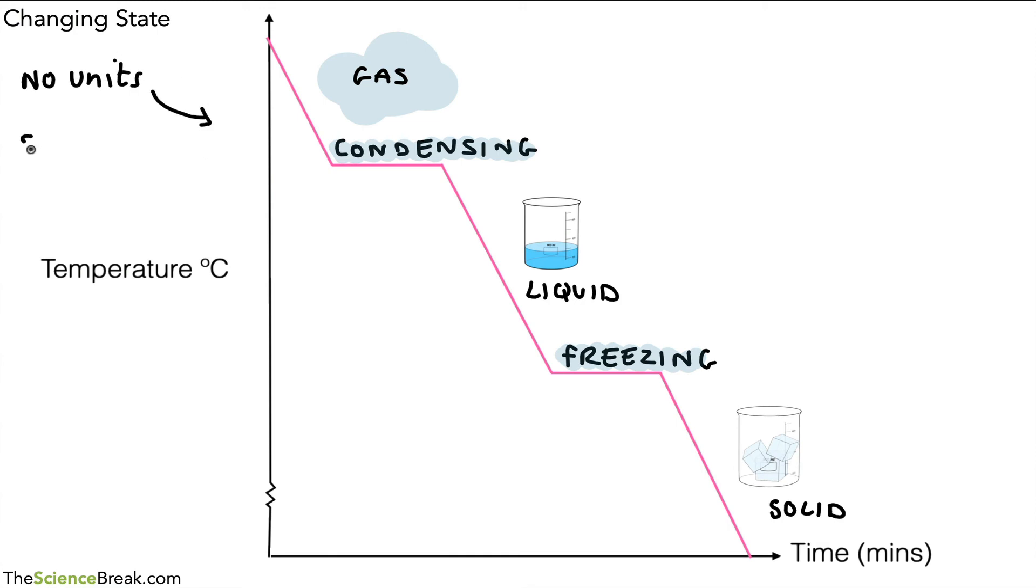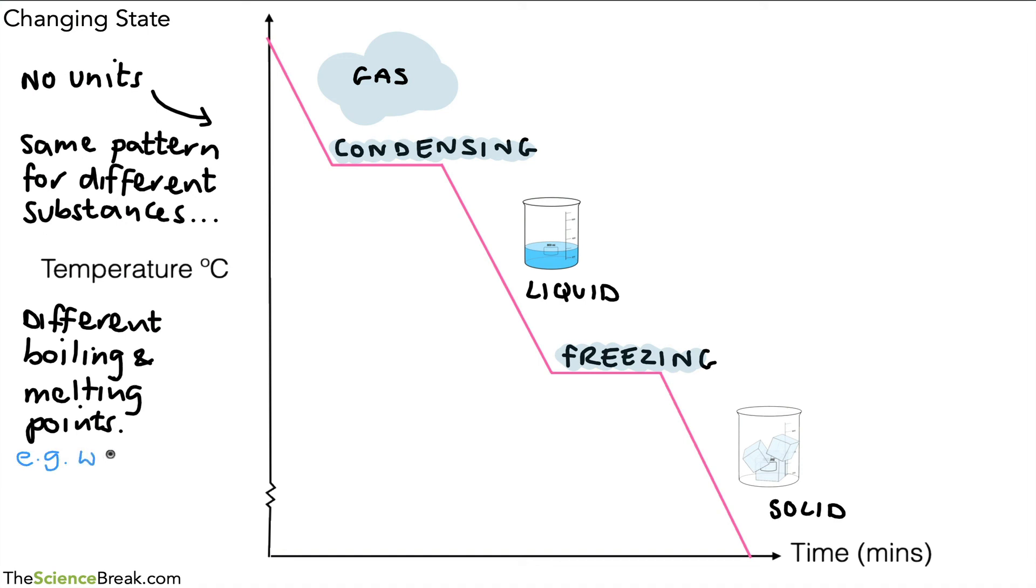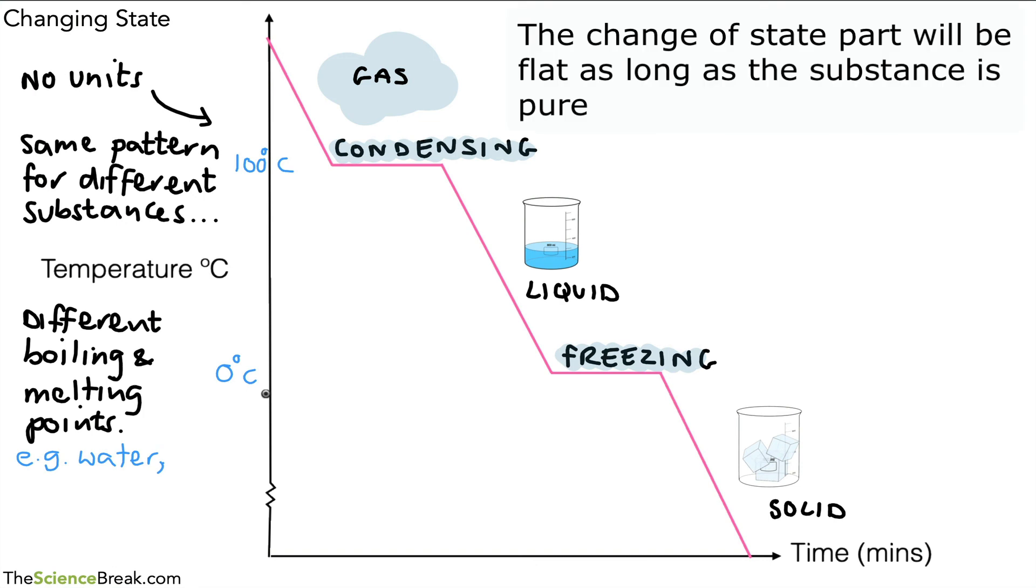On the graph, I haven't put any units only because the pattern is the same for different solids, liquids and gases. So we'll have a bit where it cools down, a bit where it's flat. The only difference would be the temperatures at which it happens. So different substances have different boiling and melting points, different condensing and different freezing points. So for water, for example, if we were using water here, the condensing and boiling point is 100 degrees C and the freezing and melting point is zero degrees C. But for other substances, those numbers might be different. However, the shape of the graph will be the same for pure substances.